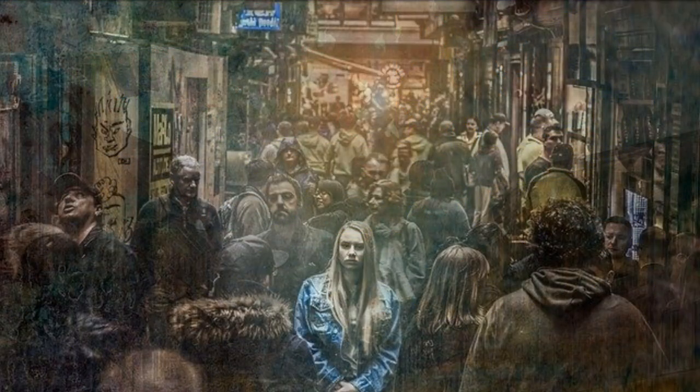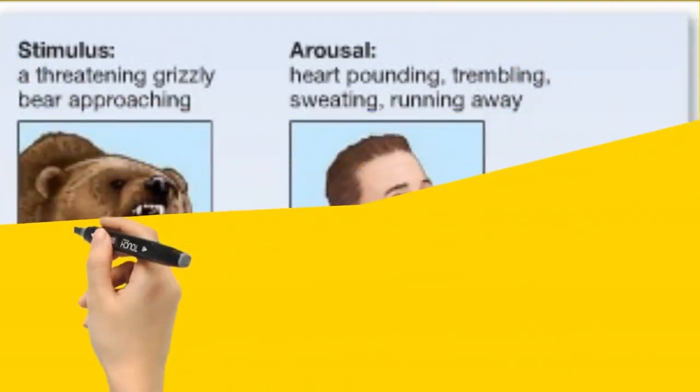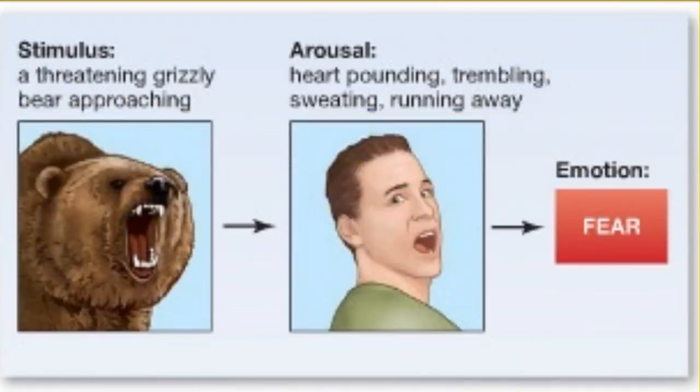There are theories that explain emotions. One, James-Lang theory: The James-Lang theory proposes that you interpret your physical reactions and conclude that you are frightened. 'I am trembling.'